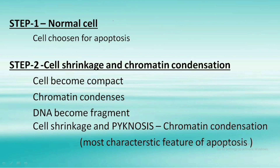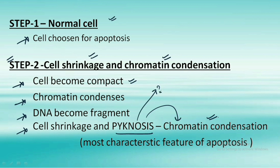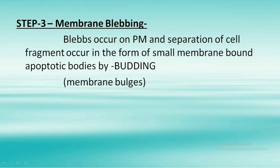In step one we have a normal cell chosen for apoptosis. In step two, cell shrinkage and chromatin condensation occur — the cell becomes compact, the chromatin condenses, and the DNA becomes fragmented. Along with cell shrinkage we also have pyknosis. Pyknosis means chromatin condensation — make sure to remember this term, as exam questions have been framed directly from this point. Pyknosis is one of the most characteristic features of apoptosis.